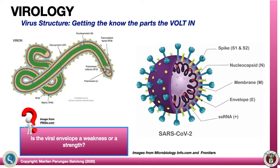A thought bubble: these particular viruses — like Ebola on the left and SARS-CoV-2 on the right — have envelopes, like influenza. Do you think the viral envelope is a weakness or a strength? Think about that, and if you wish to discuss it, you can send me a message.